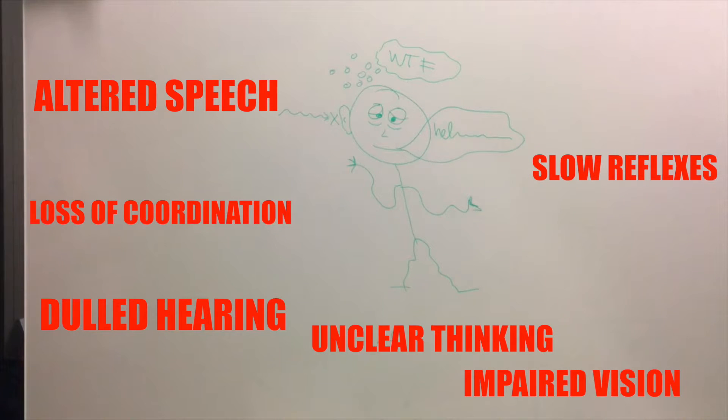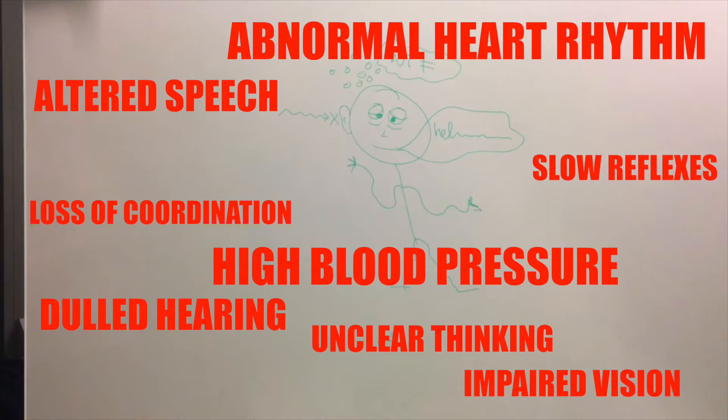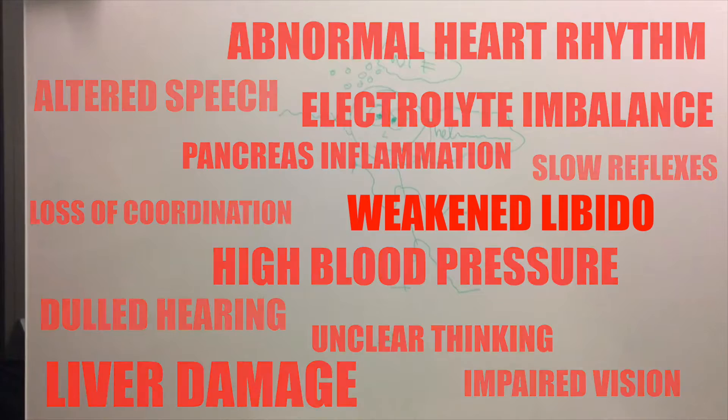Ethanol does not only affect the brain. Heavy drinking can cause high blood pressure and your heart to beat abnormally. Ethanol can also scar and damage the liver, cause inflammation of the pancreas, and disturb the regulation of electrolytes by the kidneys. It can even weaken your libido.